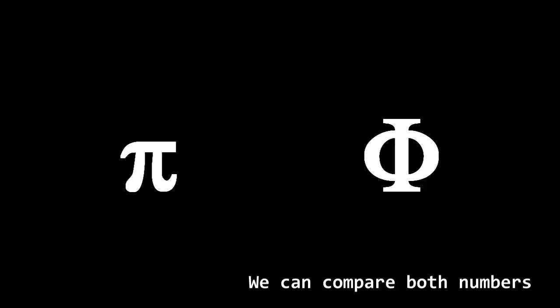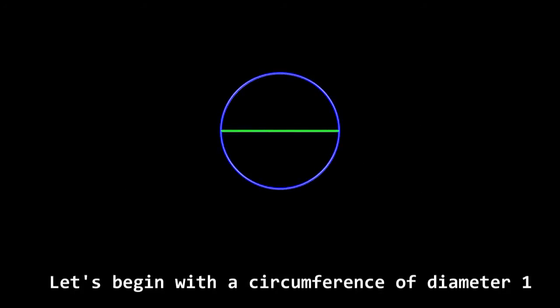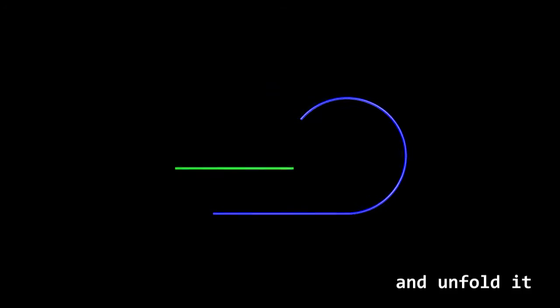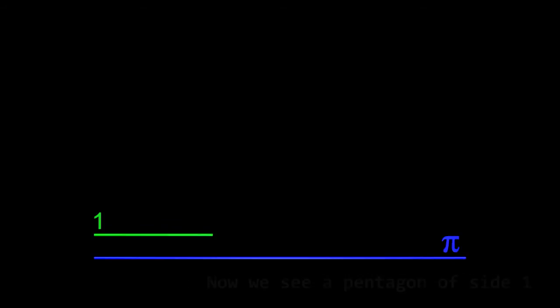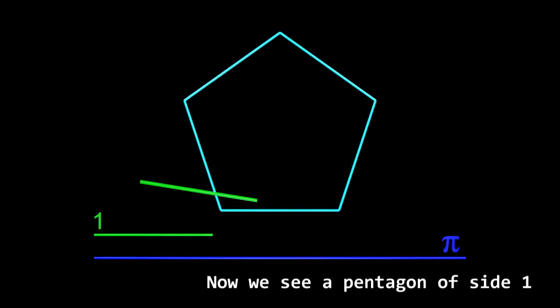We can compare both numbers. Let's begin with a circumference of diameter 1 and unfold it. We can see the relation between Pi and 1. Now we see a pentagon of side 1.